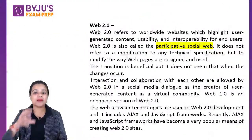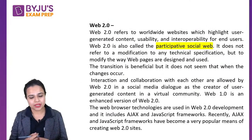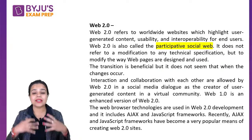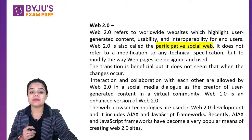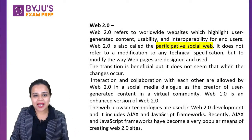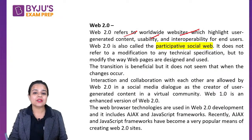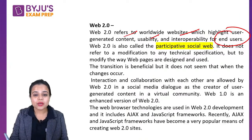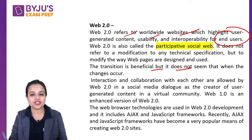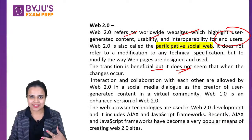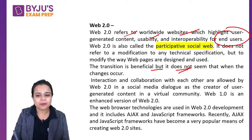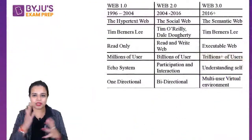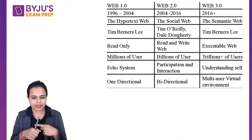Then came Web 2.0, which suddenly became more participative. Where Web 1.0 was only static with more consumers than creators, Web 2.0 became a participative social web. It was more about content usability, interoperability, and end users. It was not static but had many changes happening. Web 2.0 is an enhanced version — if we look at the difference between 1.0 and 2.0, Web 2.0 is participative and collaborative.